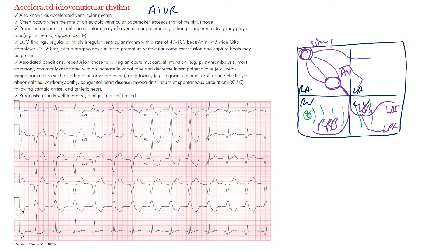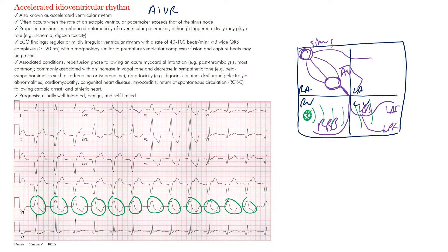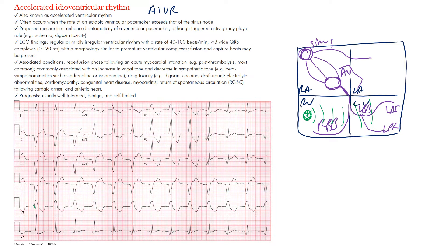If the rhythm is monomorphic, it means it's coming from the same site. Notice the wide complexes down here all look the same — that's monomorphic morphology, meaning it has one appearance. These QRS complexes are wide, meaning they're more than three small boxes, which is 120 milliseconds.